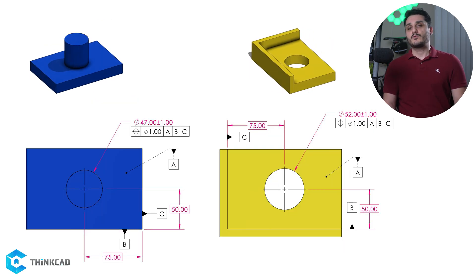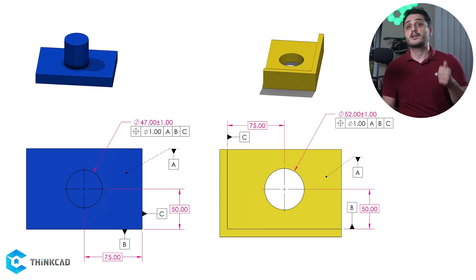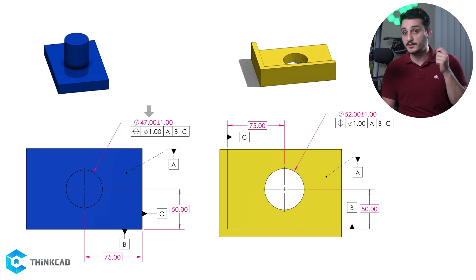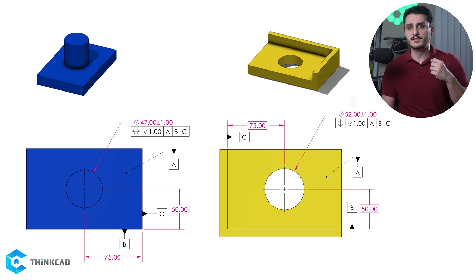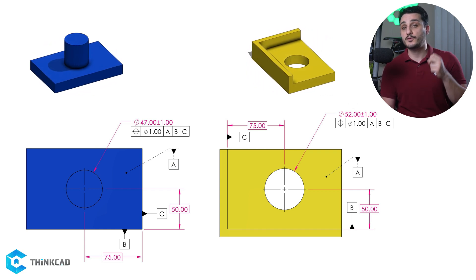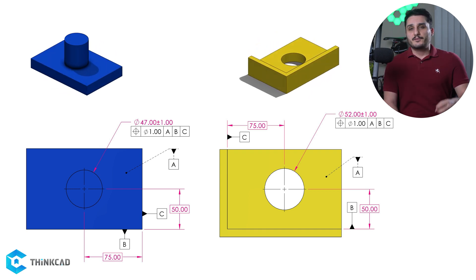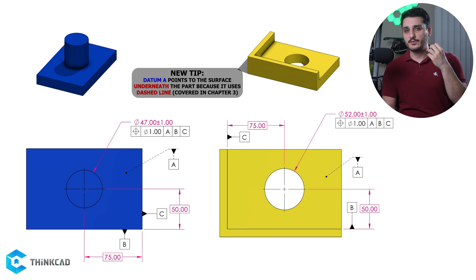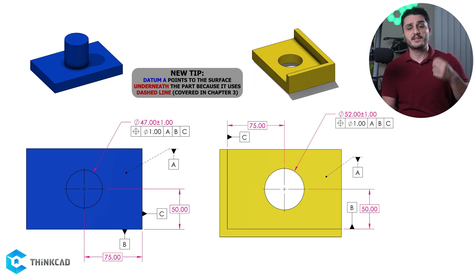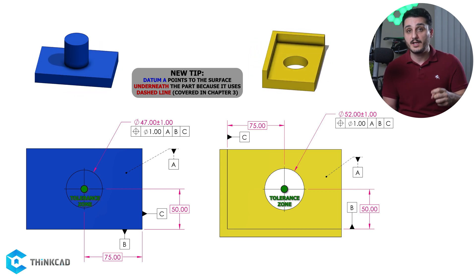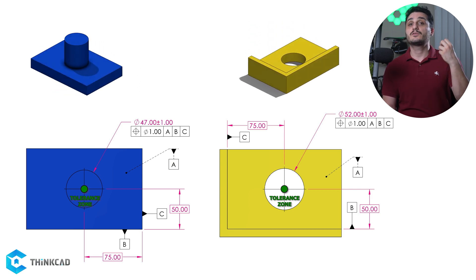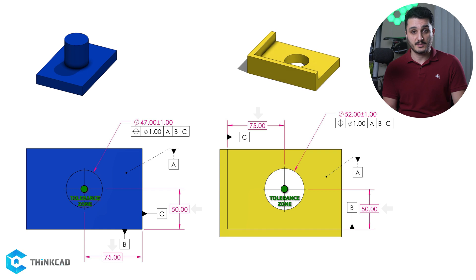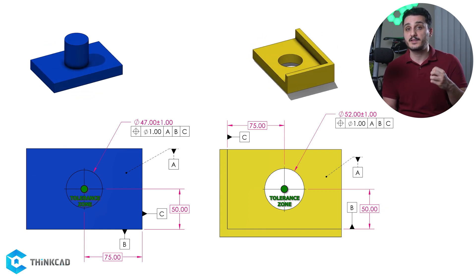Look at these two parts. One of them has a boss cylindrical feature on its base and the other one has a hole while having two sidewalls. The boss feature is 47 mm in diameter plus and minus 1 mm, and the hole feature is 52 mm plus and minus 1 mm. This means our size tolerance for both features is 2 mm. I have specified a position tolerance of 1 mm to locate our two features based on their three datums A, B, and C, specifying a cylindrical tolerance zone with a diameter of 1 mm that our two center axes have to lie within.